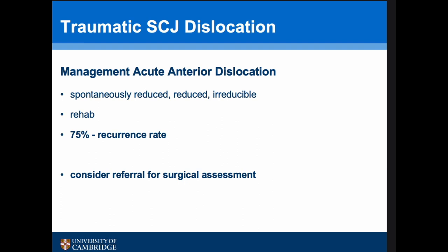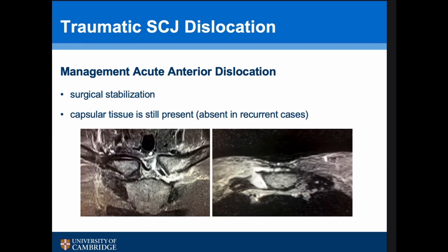Even irreducible anterior dislocations have previously been managed with rehab alone, with the feeling that patients would cope well. However, there is a 75% recurrence rate of re-dislocation following anterior SCJ dislocation, so I'd certainly consider referral for surgical assessment. Interestingly, for acute anterior dislocations the capsular tissues are still present, whereas in recurrent instability they tend to disappear. With recurrent SCJ instability you always have to undertake a reconstruction with hamstring tendons, which is a much bigger operation.